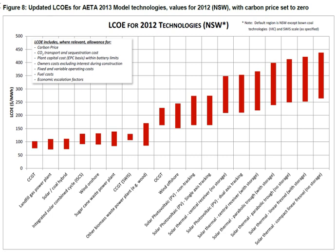In electrical power generation, the distinct ways of generating electricity incur significantly different costs. Calculations of these costs can be made at the point of connection to a load or to the electricity grid. The cost is typically given per kilowatt-hour or megawatt-hour. It includes the initial capital, discount rate, as well as the costs of continuous operation, fuel, and maintenance. This type of calculation assists policymakers, researchers and others to guide discussions and decision-making.